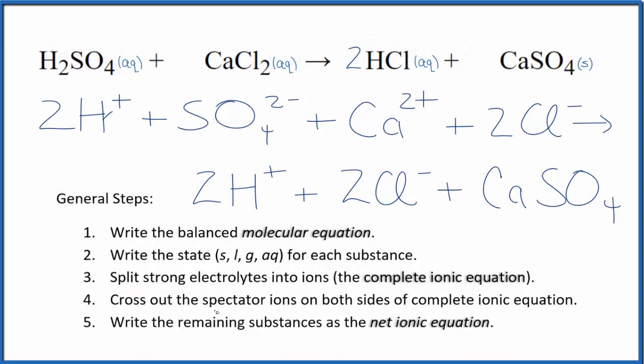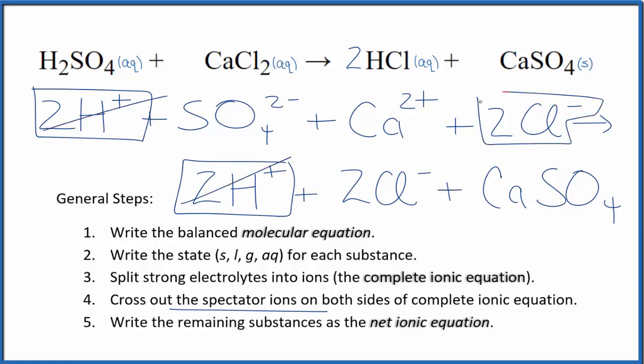So now that we have the complete ionic equation, we can cross out spectator ions. They're on both sides. So we see the reactants up here and the products down here. In the reactants, we have two of these H plus ions, two hydrogen ions. These are spectator ions. We'll cross these out. We have two chloride ions here. And again in the products, two chloride ions, spectator ions. We cross those out.